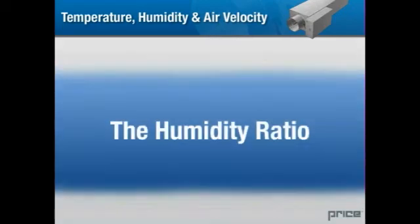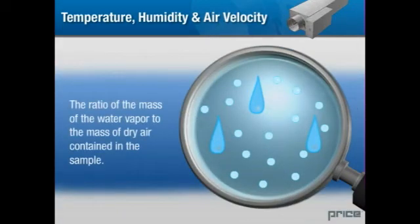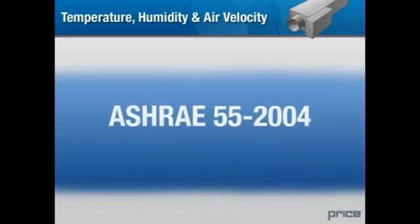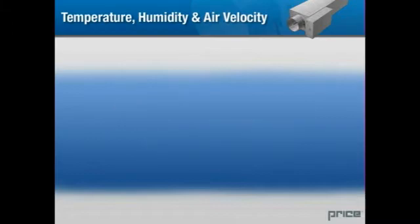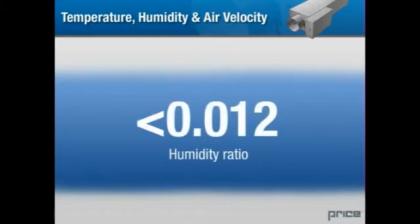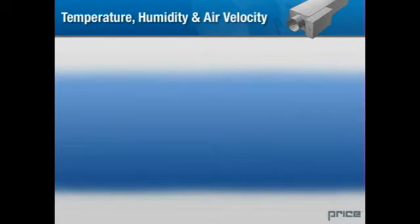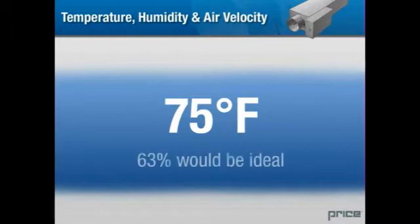The humidity ratio. This refers to the ratio of the mass of the water vapor to the mass of dry air contained in a sample. ASHRAE Standard 55-2004, Thermal Environmental Conditions for Human Occupancy, has established that a humidity ratio less than 0.012 will provide the best level of human comfort. For example, if your room temperature is 75 degrees Fahrenheit, a relative humidity level of 63% would be ideal.